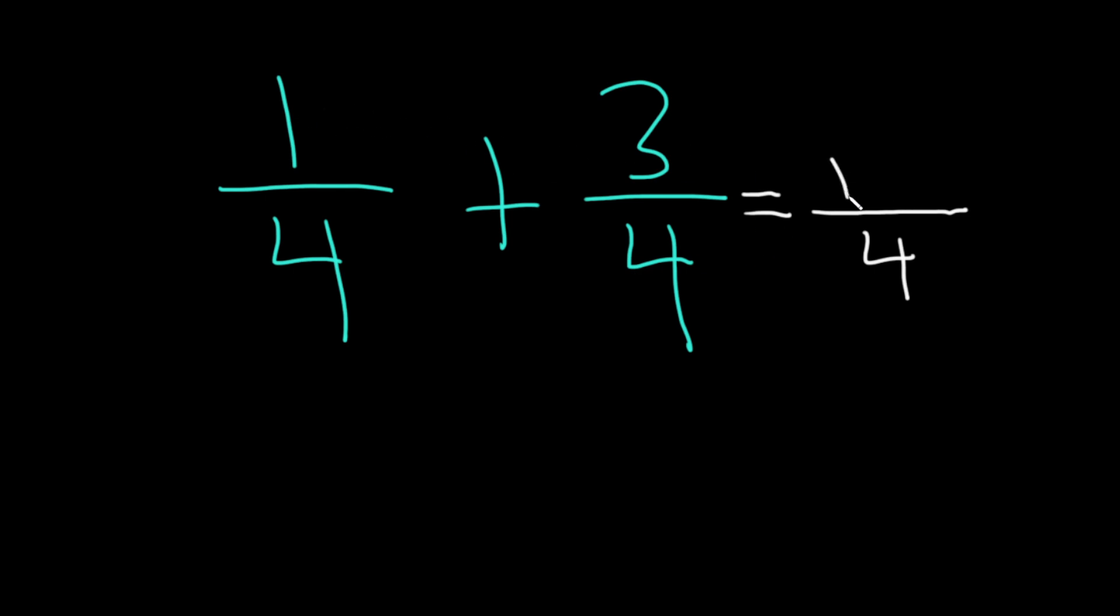Those are the numbers up top. So 1 plus 3, like that. And then 1 plus 3 is 4. So this is actually 4 divided by 4.